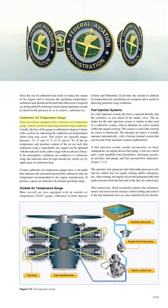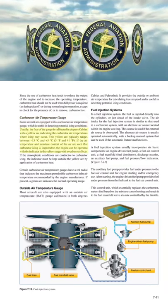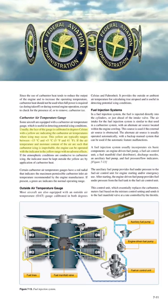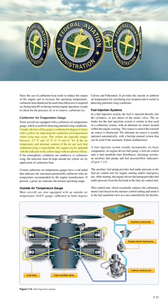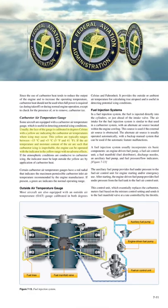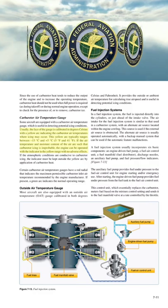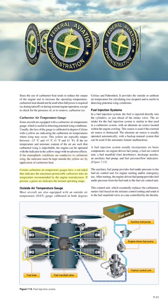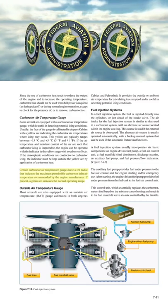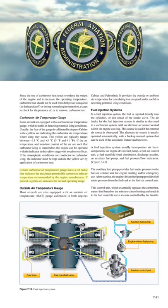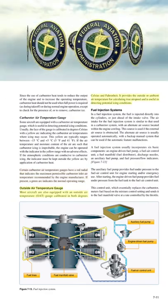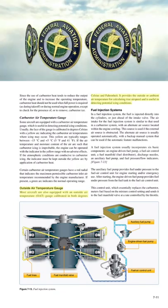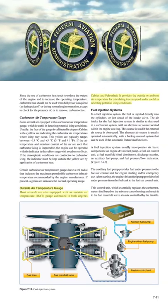Some aircraft are equipped with a carburetor air temperature gauge, useful in detecting potential icing conditions. The face of the gauge is calibrated in degrees Celsius with a yellow arc typically ranging between −15°C and +5°C (5°F and 41°F) indicating carburetor air temperatures where icing may occur. If atmospheric conditions are conducive to carburetor icing, the indicator must be kept outside the yellow arc by application of carburetor heat. Some carburetor air temperature gauges have a red radial indicating the maximum permissible carburetor inlet air temperature, and a green arc for the normal operating range. Most aircraft are also equipped with an outside air temperature (OAT) gauge calibrated in both Celsius and Fahrenheit, useful in detecting potential icing conditions and calculating true airspeed.